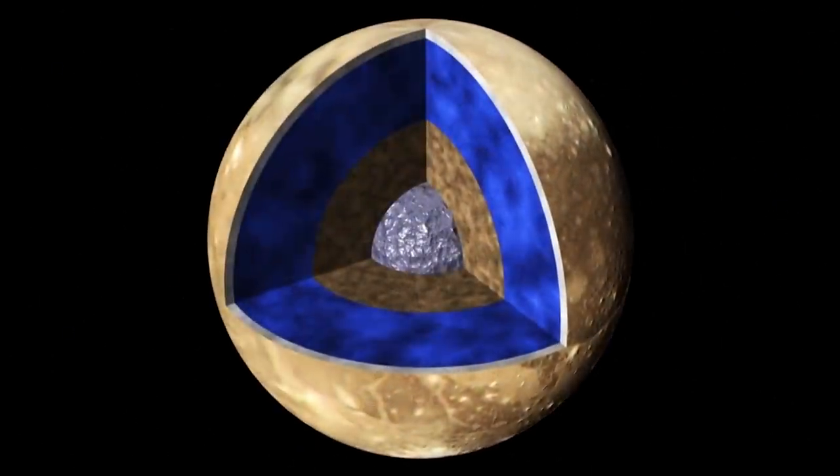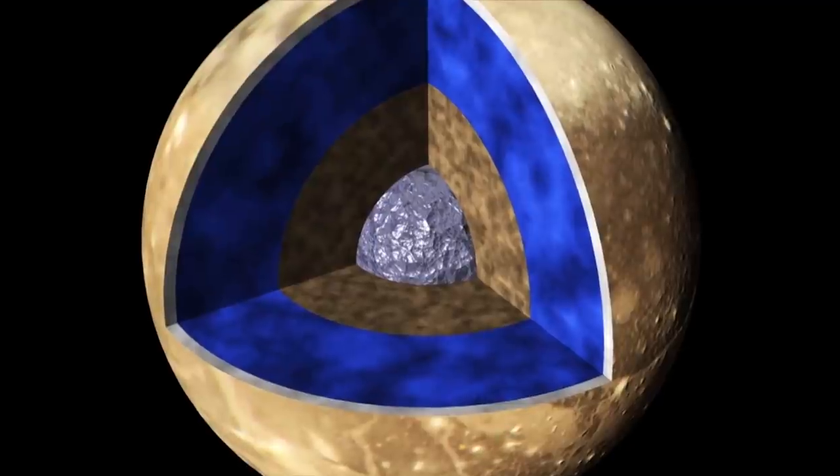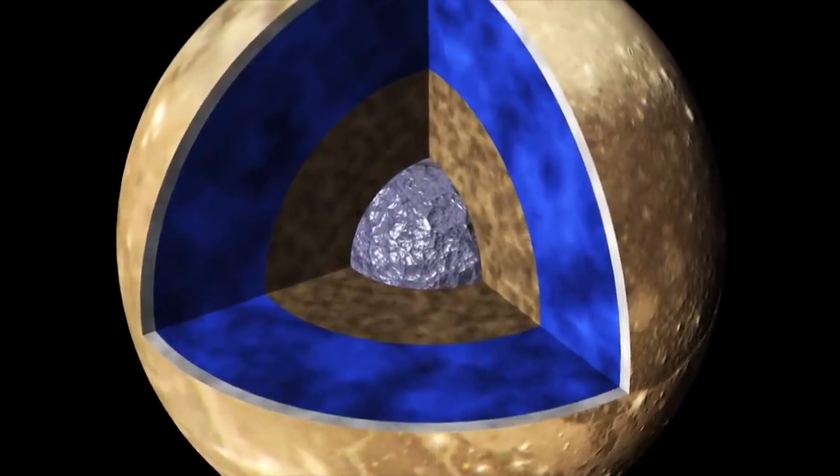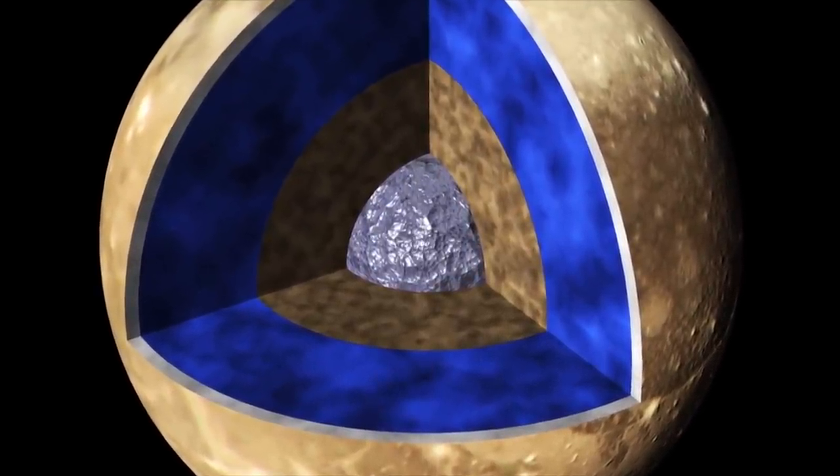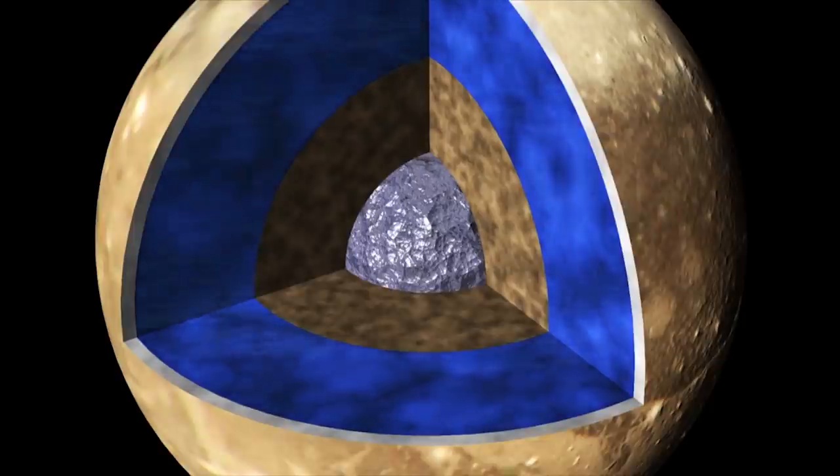Because of its heat, Ganymede's interior has likely separated into layers: an iron-rich core at the center, a surrounding mantle of rock, and a thick layer of ice on top. As with Callisto, there is evidence on Ganymede for an ocean of salt water somewhere below the surface.